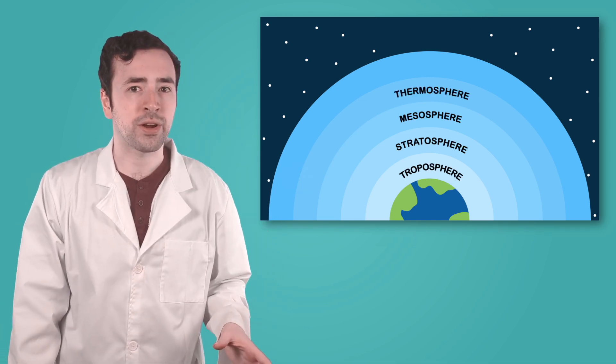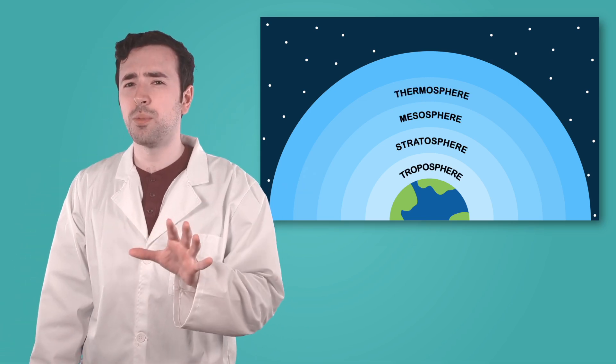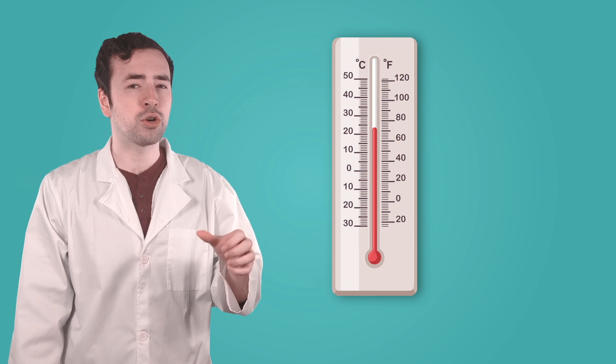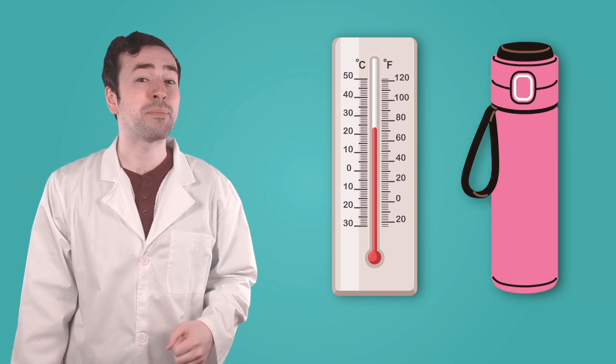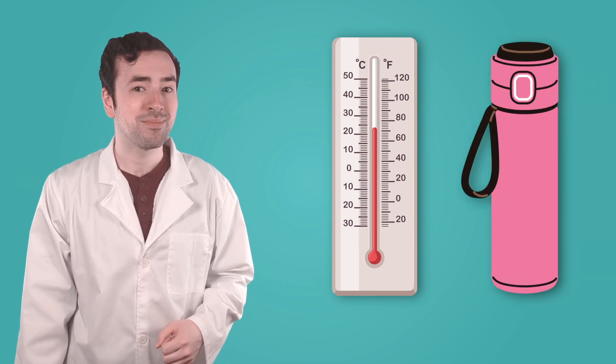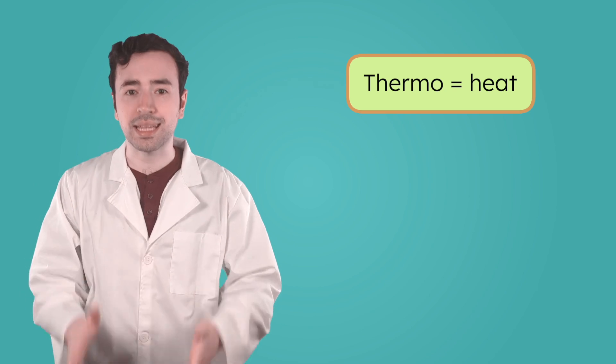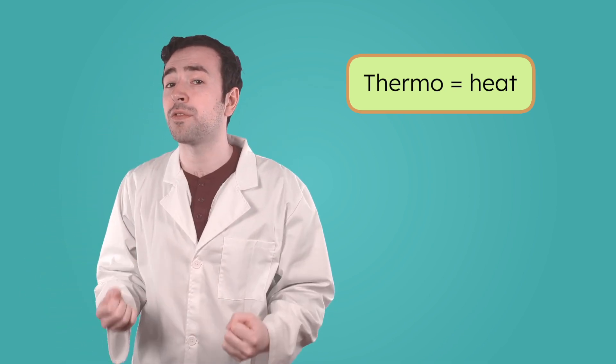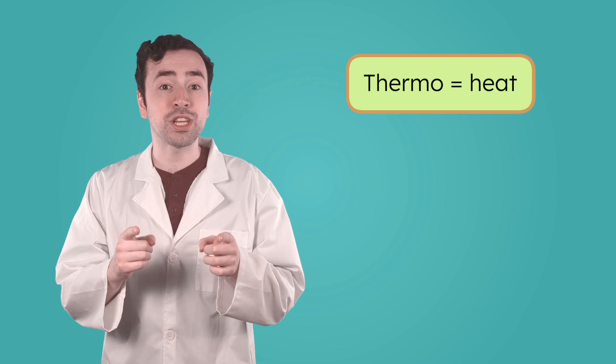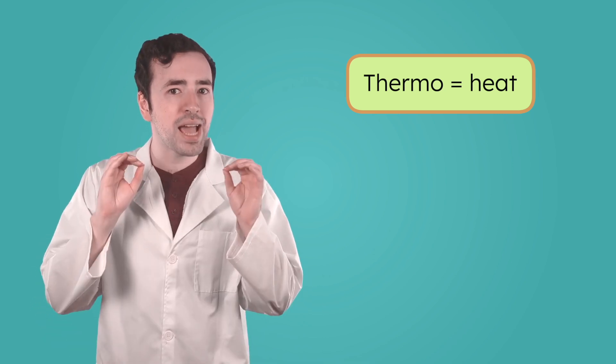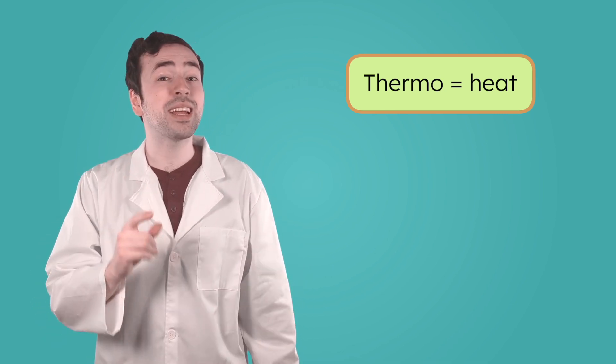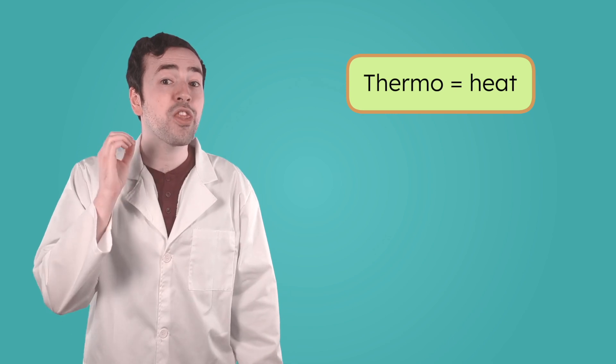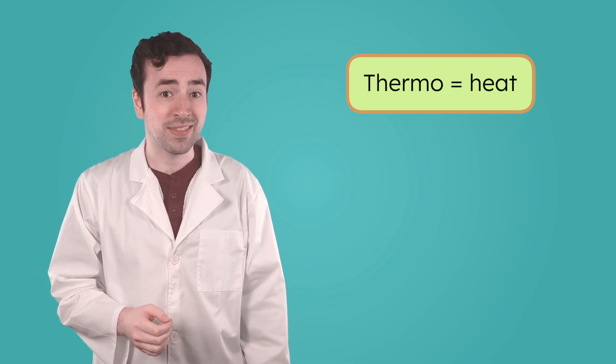Above the mesosphere is the thermosphere. Have you seen the word thermo before, like in thermometer or thermos? What do you think it might be like here? Thermo means heat. This layer gets its name because it soaks up a lot of energy from the sun. That energy makes the thermosphere the hottest layer of the atmosphere. The air can get hotter than 3000 degrees! That's hot enough to melt metal.